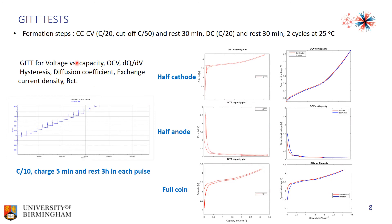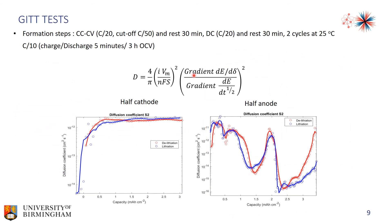This slide shows the GITT test. For this part, we aim to obtain the voltage versus capacity profile, the OCV, DQ/dV, DC resistance, diffusion coefficient, exchange current density, and RCT. This figure shows the typical charge profiles at C/2: in each pulse, we charge for 5 minutes and rest for 3 hours. These three figures show the voltage profiles for the half-cell cathode, half-cell anode, and full coin cell. From these figures we can also extract the OCV profiles and DQ/dV and DC resistance. For the diffusion coefficient, using the Cottrell equation in MATLAB code, we obtained the diffusion coefficient for the half-cell cathode and half-cell anode. The diffusion coefficient in the half-cell cathode is higher than that in the half-cell anode.